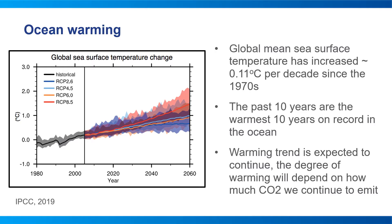As the ocean absorbs more heat, sea surface temperature rises. Global mean sea surface temperature has increased by around a tenth of a degree per decade since the 1970s, and the past 10 years have been the warmest 10 years on record. Unfortunately, ocean warming is not only expected to continue but will increase as more greenhouse gases are emitted across all projected future scenarios.